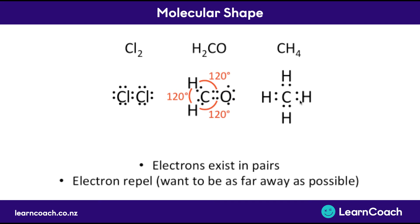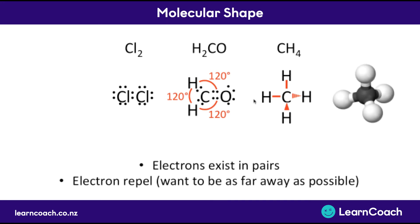Whereas if we look at CH4, the electron pairs can get further apart from each other by being in a three-dimensional structure. Some of the hydrogens might go backwards into the page, as denoted by a dashed line. Some might be coming out into the page, and some might be flat. You can imagine this 3D structure where each of these angles happens to be 109.5 degrees apart — the furthest apart any electron pair can get when there are four bonds.